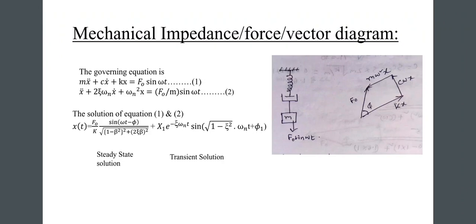Our next topic is mechanical impedance — the force or vector diagram. The governing equation is m·x-double-dot plus c·x-dot plus k·x equals f-naught·sin(omega·t), equation 1. This can be rewritten as x-double-dot plus 2·zeta·omega_n·x-dot plus omega_n²·x equals (f-naught/m)·sin(omega·t), equation 2. The solution is x(t) equals (f-naught/k)·sin(omega·t minus phi) divided by the square root of (1 minus beta²)² plus (2·zeta·beta)².